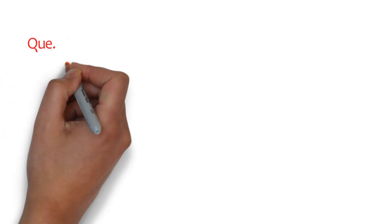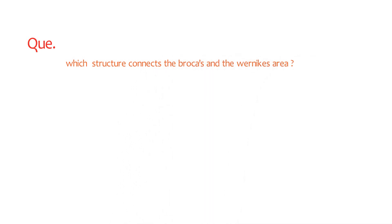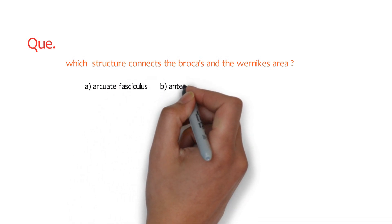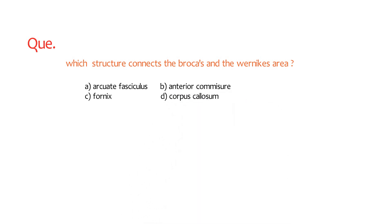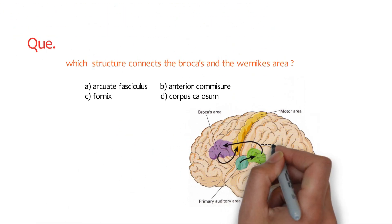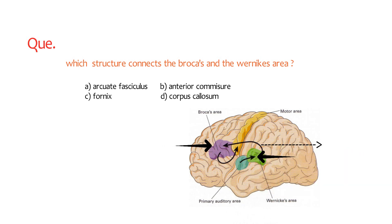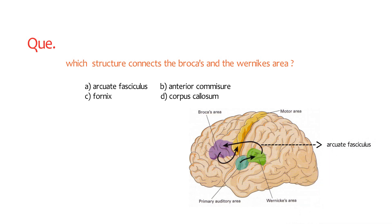Here is a quick question: which structure connects Broca's area and Wernicke's area? The options are: A) arcuate fasciculus, B) anterior commissure, C) fornix, or D) corpus callosum. The answer is the arcuate fasciculus — Broca's area and Wernicke's area are connected by the arcuate fasciculus.